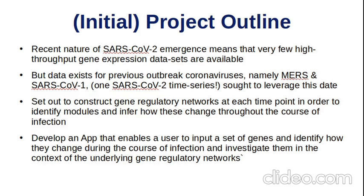The initial project outline was: I originally thought out this idea that because SARS-CoV-2 was such a recent thing to emerge — the outbreak is quite recent — there was basically a lack of high throughput gene expression data available for it. But I was thinking, due to its relatedness to SARS-CoV-1 and to an extent MERS, you could utilize the previously published high throughput microarray data on these viruses. We set out to construct gene-regulatory networks based on the differentially expressed genes or co-expressed genes within time series, constructing networks at each time point and then comparing them between the viruses.